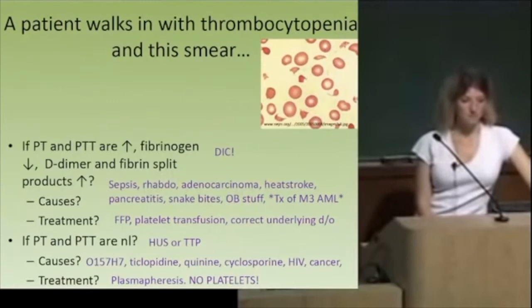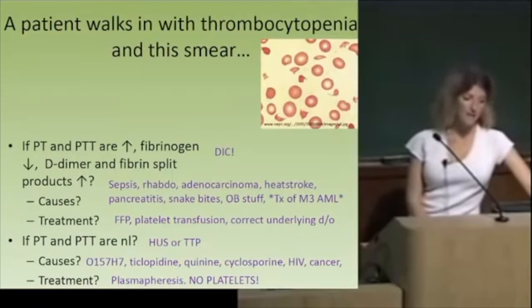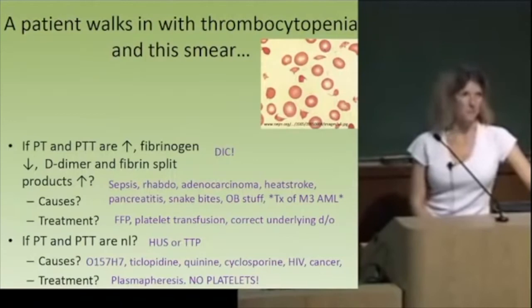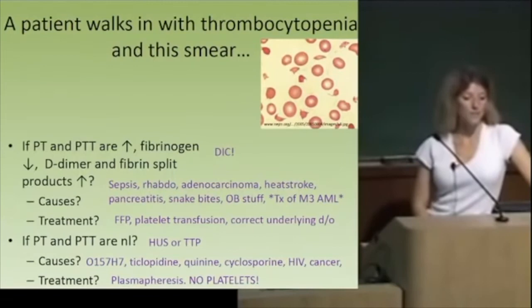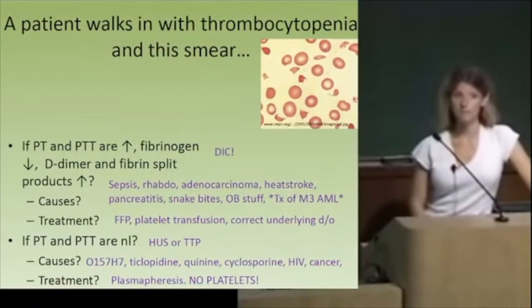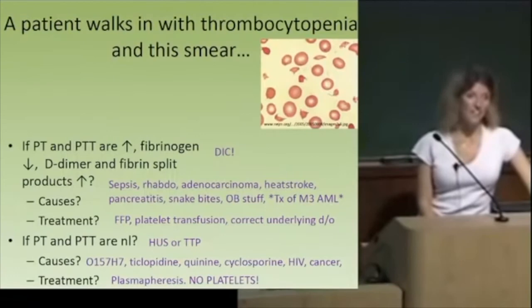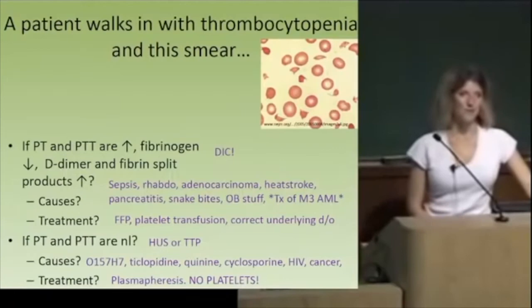If a patient walks in with thrombocytopenia and schistocytes on smear — that's scary. If the PTT and PT are both high, fibrinogen is low, and D-dimer and fibrin split products are high, that's DIC. Causes include sepsis — LPS from gram-negative sepsis — some OB-related causes, and treating M3 AML with Auer rods can also trigger DIC. Snake bites too. Treatment: correct the underlying cause, give FFP to replace fibrinogen, transfuse platelets — but unless you fix what started it, not much works.